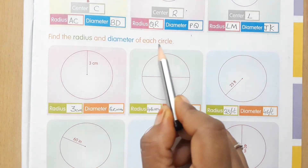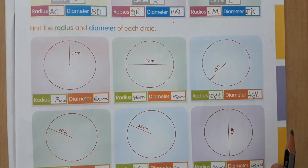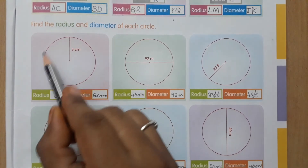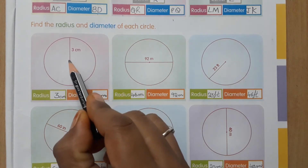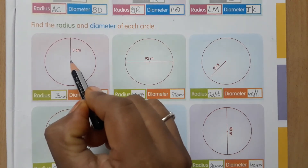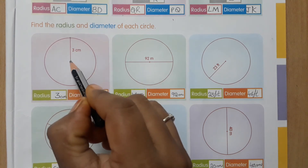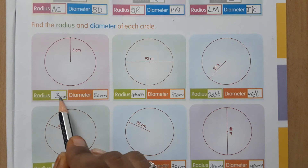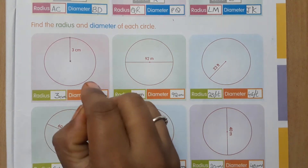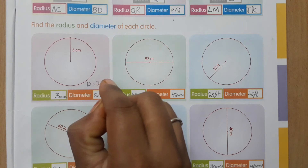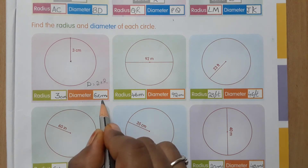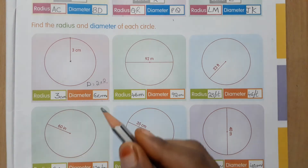Find the radius and diameter of each circle. This circle's center is shown. The distance between the center and any point on the circle is the radius — radius length is 3 centimeters. Diameter equals two times radius: 2 into 3 equals 6 centimeters. Next, the second circle: diameter is given as 92 meters. Radius equals diameter divided by two: 92 divided by 2 equals 46 meters.